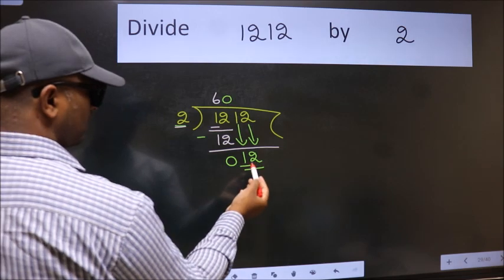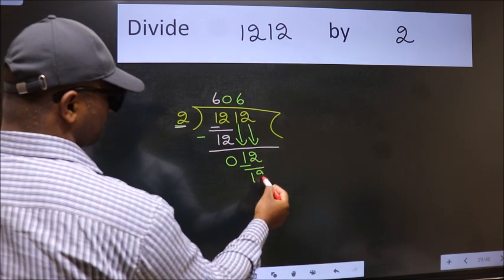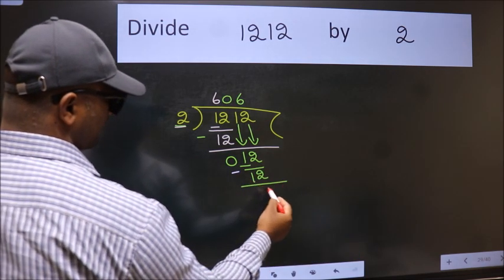So 12. When do we get 12 in the 2 table? 2 times 6 is 12. Now we subtract. We get 0.